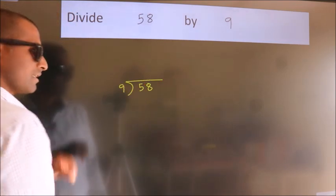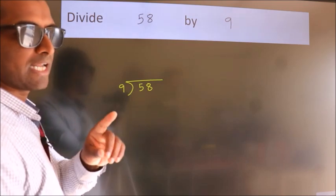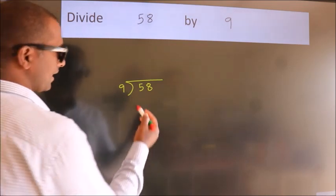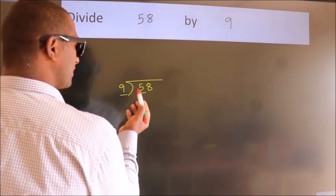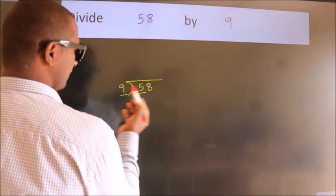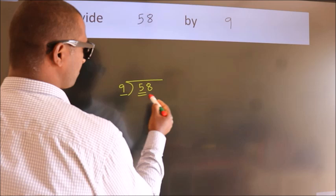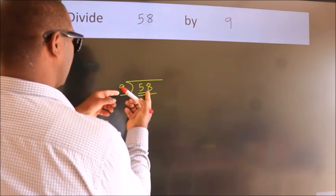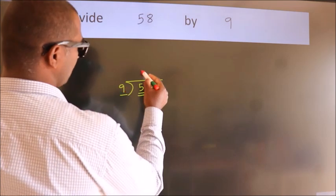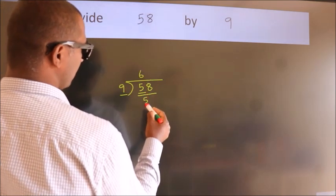This is your step 1. Next, here we have 5, here 9. 5 smaller than 9. So we should take two numbers, 58. A number close to 58 in 9 table is 9×6=54.